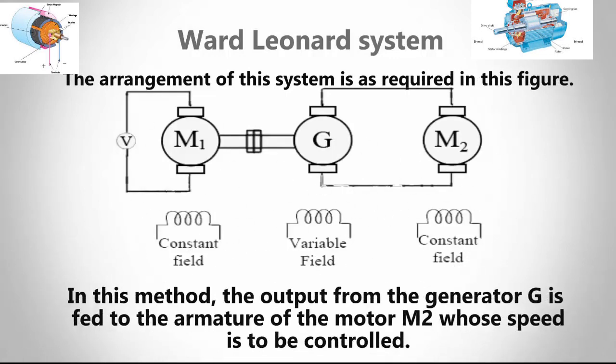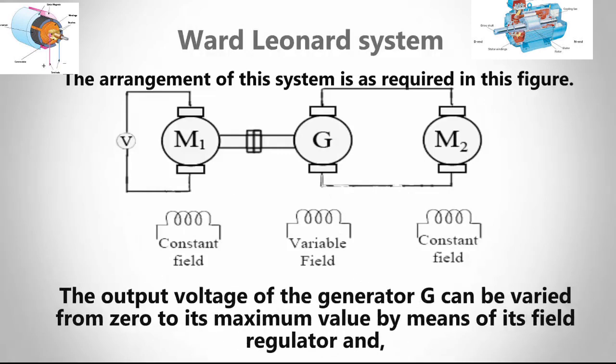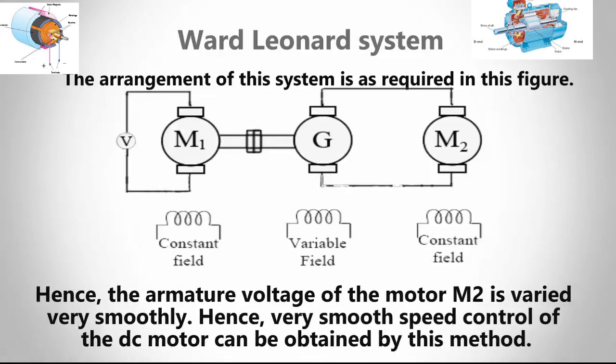In this method, the output from the generator G is fed to the armature of the motor whose speed is to be controlled. The output voltage of the generator G can be varied from zero to its maximum value by means of its field regulator, and hence the armature voltage of the motor M2 is varied very smoothly, and very smooth speed control of the DC motor can be obtained by this method.